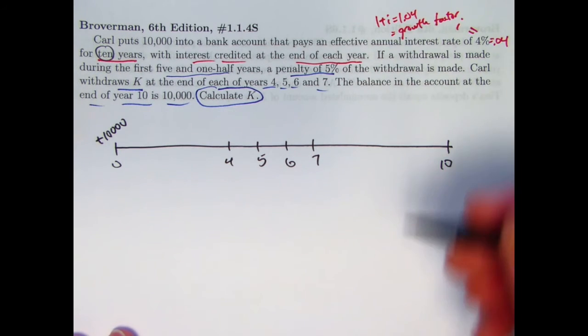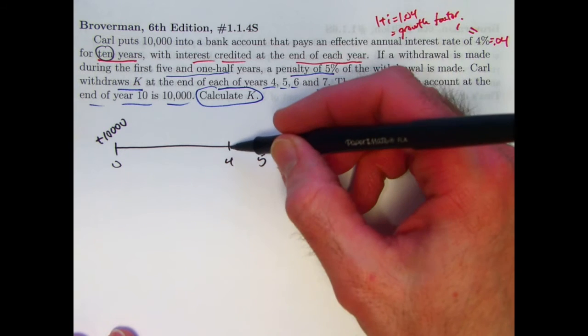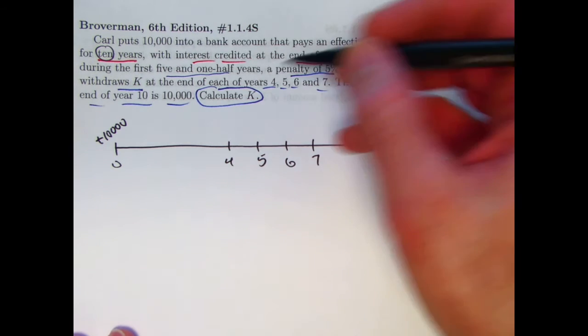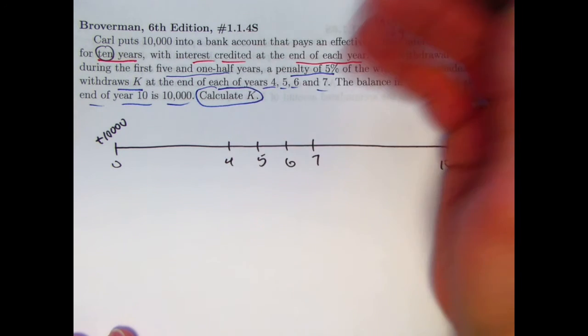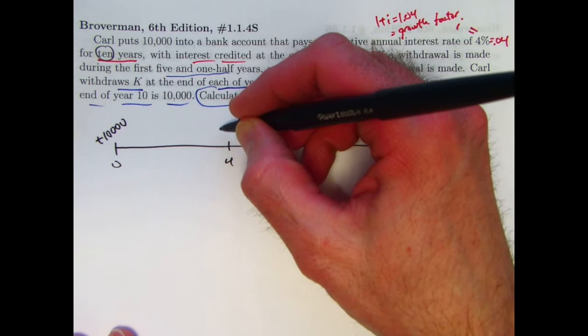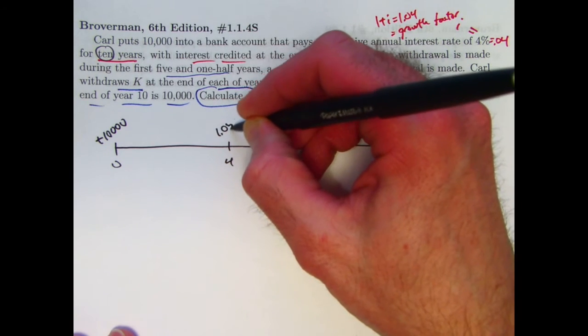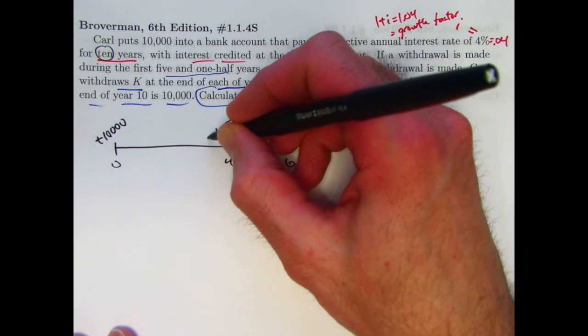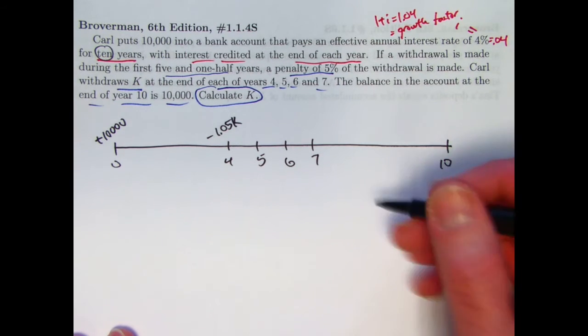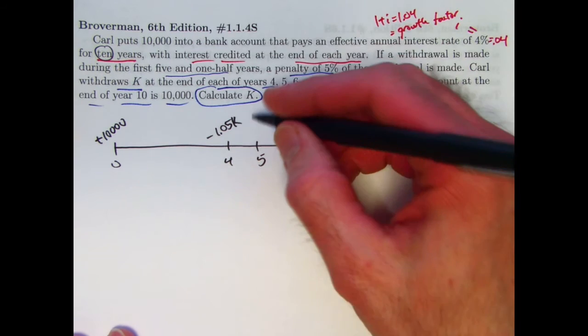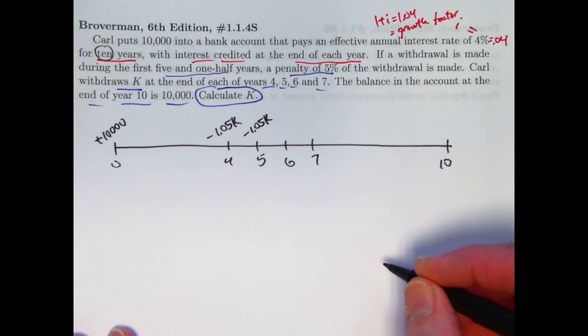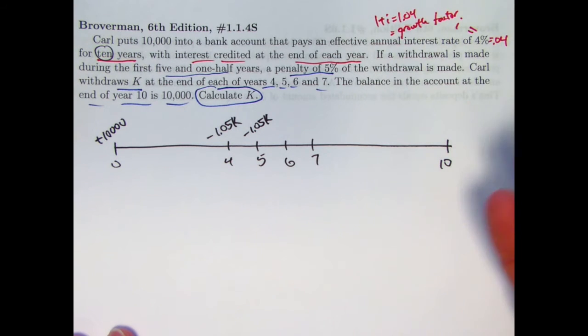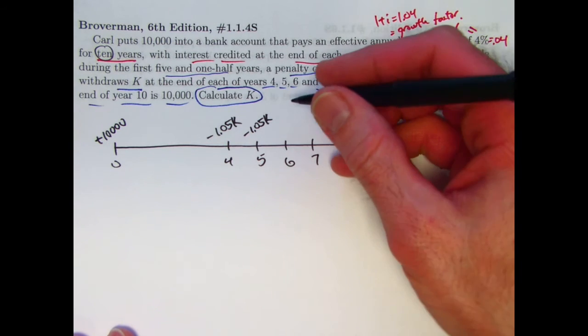Withdrawals made during the first five and a half years have a penalty. So the withdrawals that I make in years 4 and 5 are going to have a penalty. So the amount that I take out because of the penalty, say for the first withdrawal, is not K, but 1.05 times K. Let me put a minus there to emphasize that that is a withdrawal. You don't have to do that, I just think it's helpful. There's also a withdrawal at year 5 that has the 5% penalty. So the total withdrawal is 1.05. Of course, I'm just getting K of that, not the 1.05K of that. 5% is going to the bank.